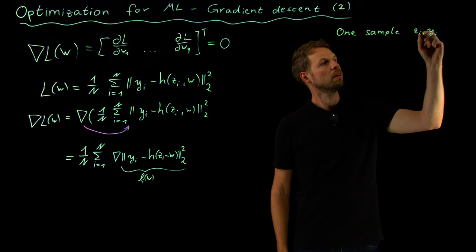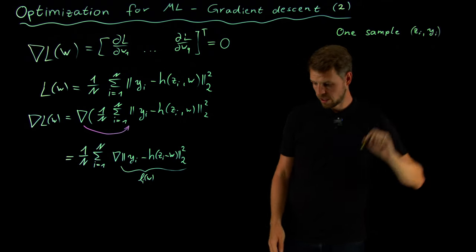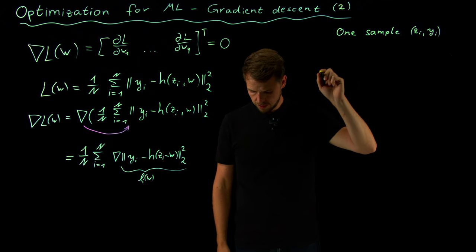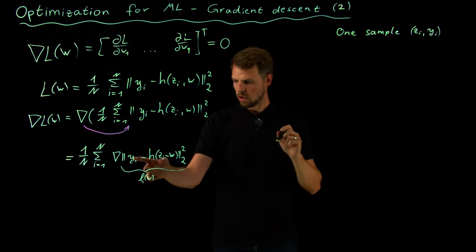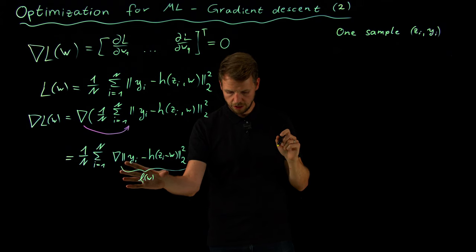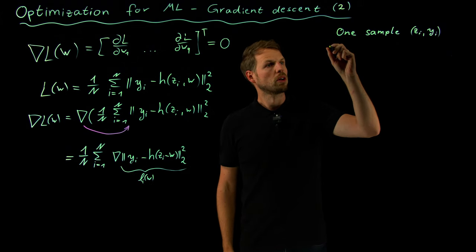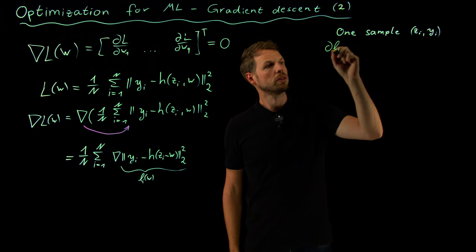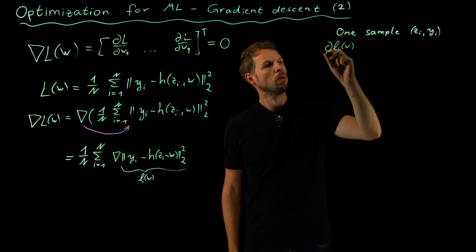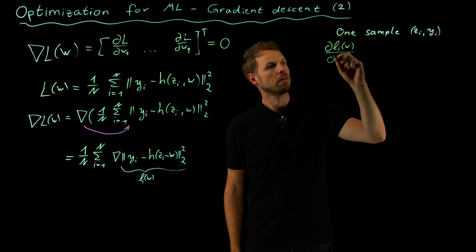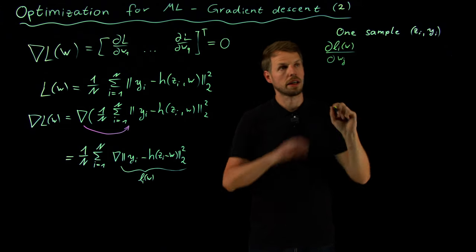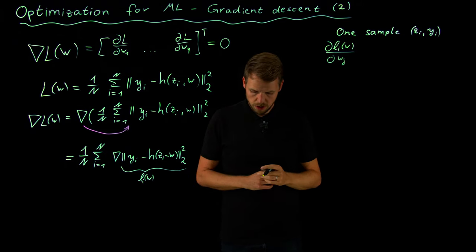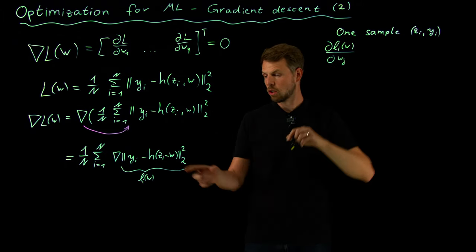So let's consider one sample first, z_i, y_i, and look at the gradient for this particular setting. What it means is we have to take the gradient of the i-th loss function, and we are now computing the individual entries with respect to the j-th value.